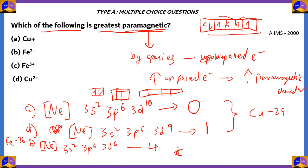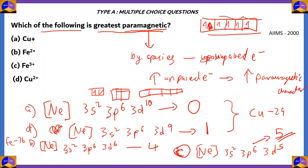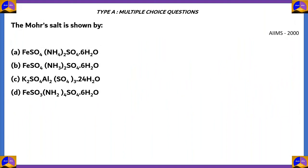Option C, Fe3+: configuration is [Ne] 3s2 3p6 3d5 — all five orbitals are only half-filled, so there are five unpaired electrons. Among the four ions, Fe3+ has the highest number of unpaired electrons, and the greater the number of unpaired electrons, the more the paramagnetic character. Therefore, option C is the right option. Fe3+ has the greatest paramagnetic character.